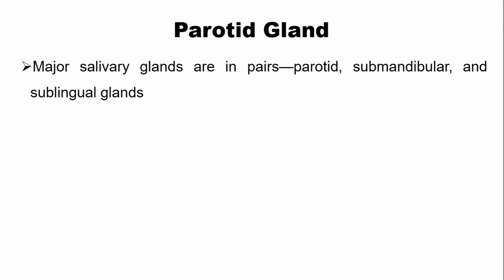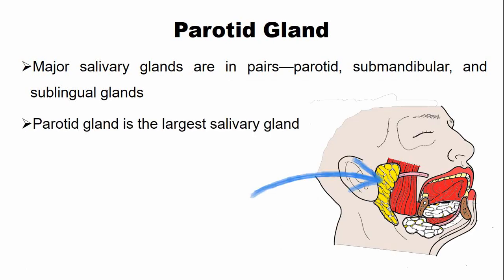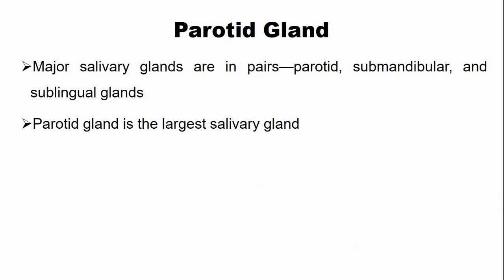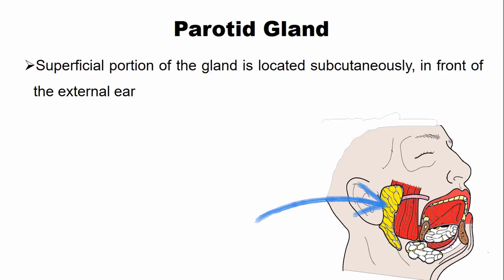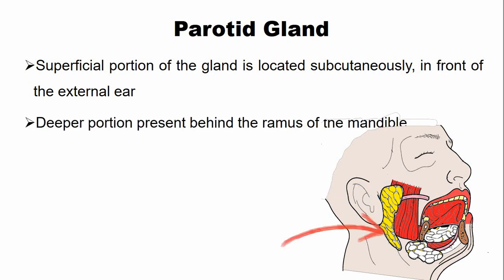The parotid is the largest salivary gland and it secretes watery saliva which is rich in enzymes such as amylase, proteins such as proline-rich proteins, and glycoproteins. The superficial portion of the gland is located subcutaneously in front of the external ear, while the deep portion of the gland is present behind the ramus of the mandible.